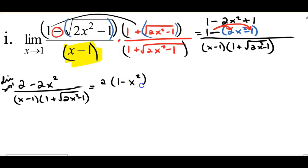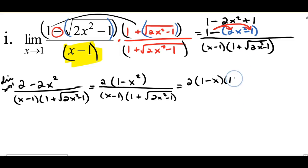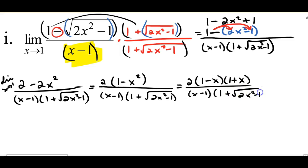This 1 minus X² — that's a difference of squares — factors to a sum and difference: 1 minus X and 1 plus X. So my numerator is 2 times (1 minus X)(1 plus X), over X minus 1 times (1 plus radical 2X² minus 1). I notice that 1 minus X and X minus 1 look similar but the signs are in different orders, and I need to handle that.